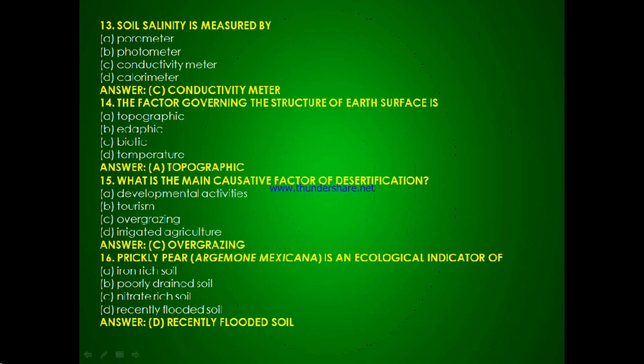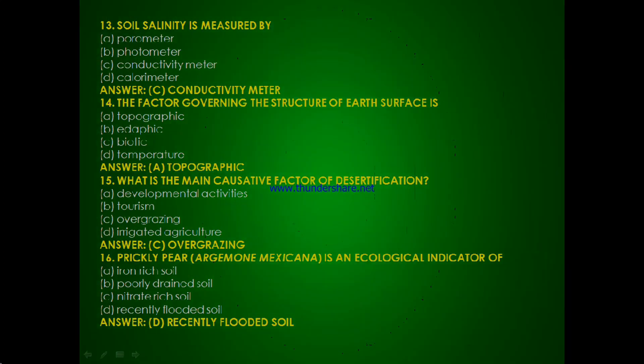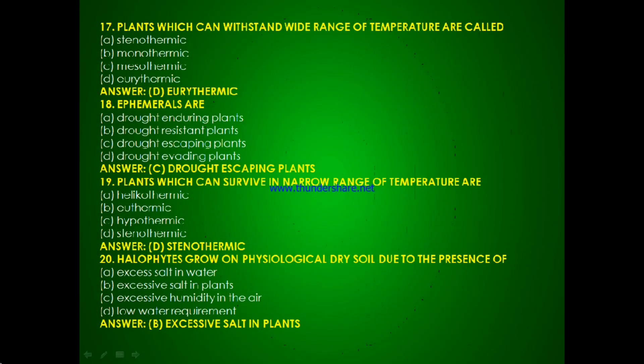Question 14: Preclipia is the organism which is an ecological indicator of — iron rich soil, poorly drained soil, nitrate rich soil or recently flooded soil? The answer is D, recently flooded soil. Question 15: Plants which can withstand a wide range of temperature are called — stenothermic, monothermic, mesothermic or eurythermic? The answer is D, eurythermic.